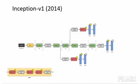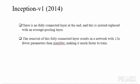Another interesting feature is there is no fully connected layer at the end, and this is instead replaced with an average pooling layer. The removal of this fully connected layer results in a network with 12 times fewer parameters than AlexNet, making it much faster to train.